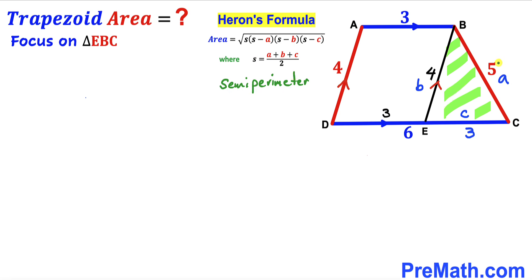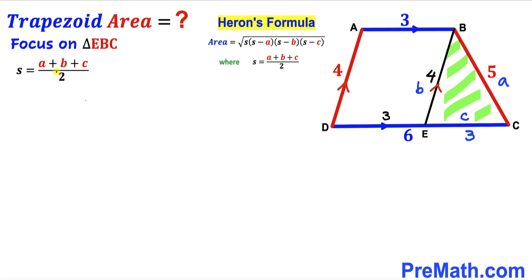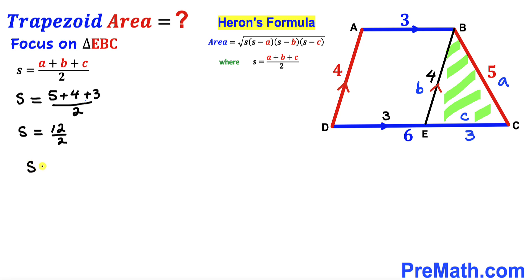In our case, a is 5, b is 4, and c is 3. So s equals (5+4+3)/2, which gives us s equal to 6.